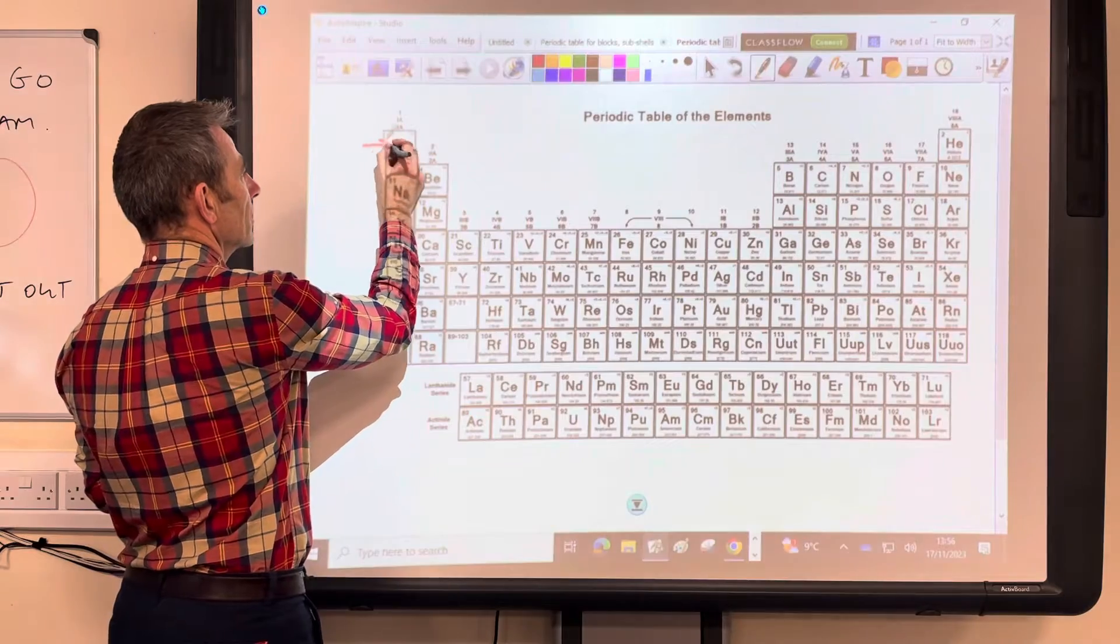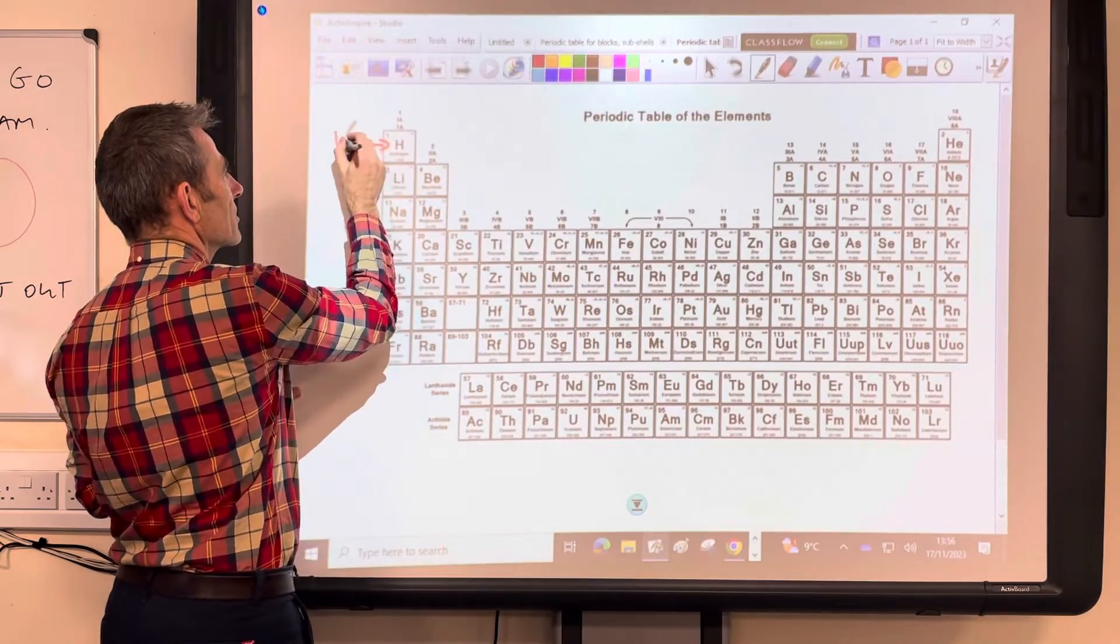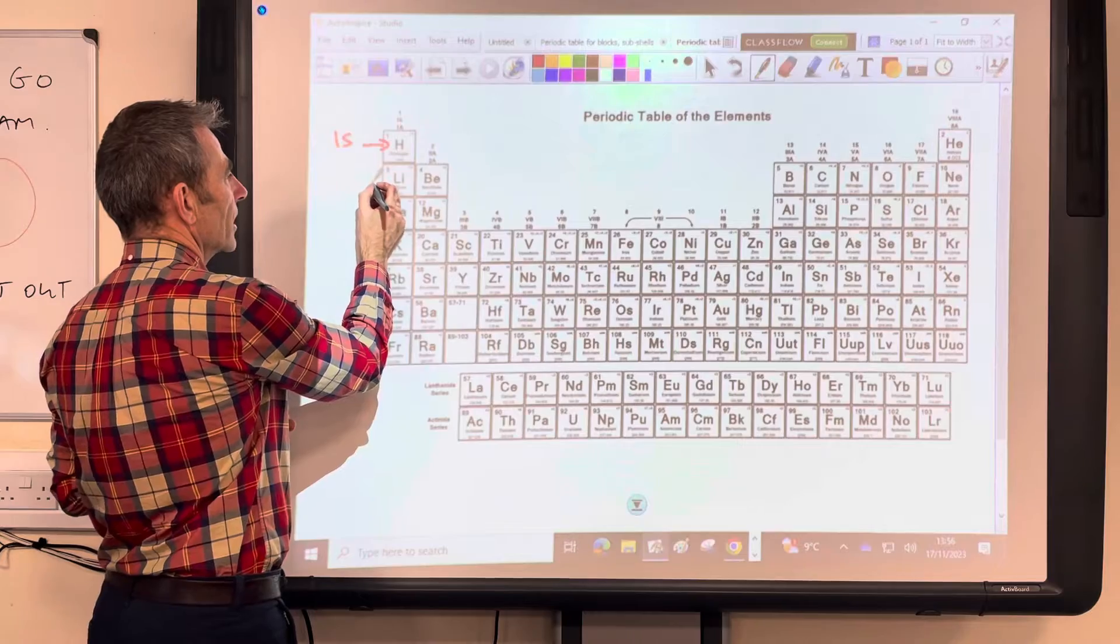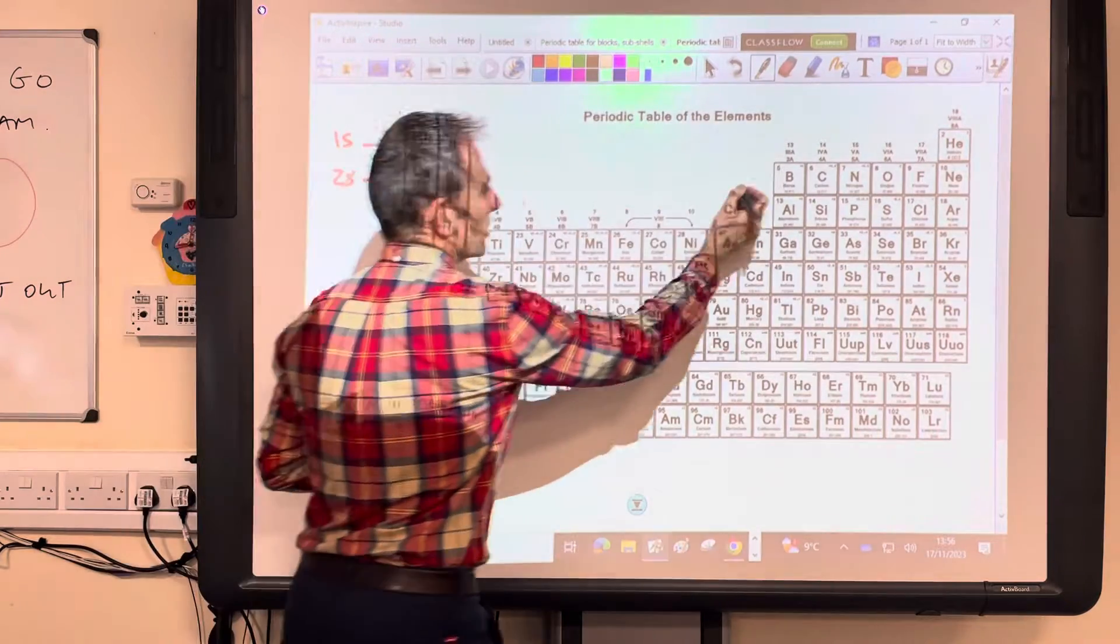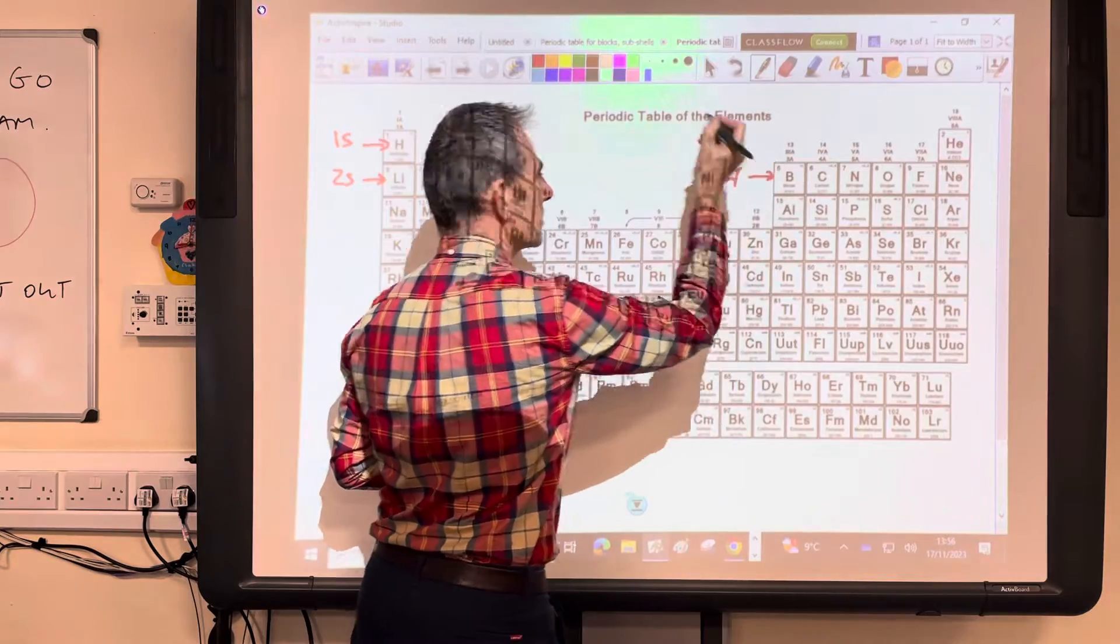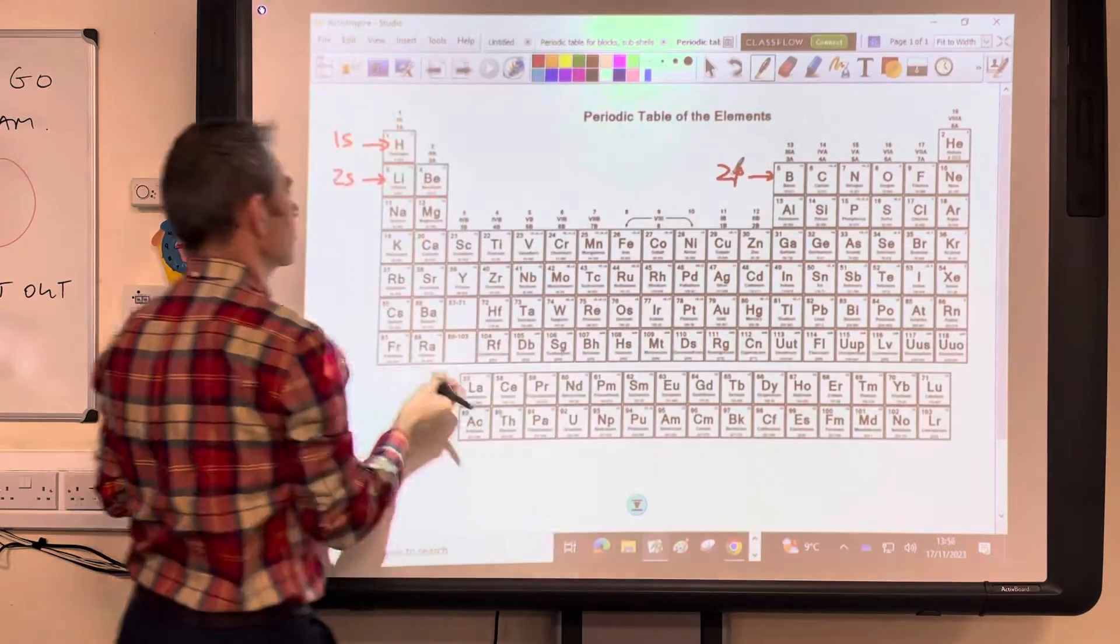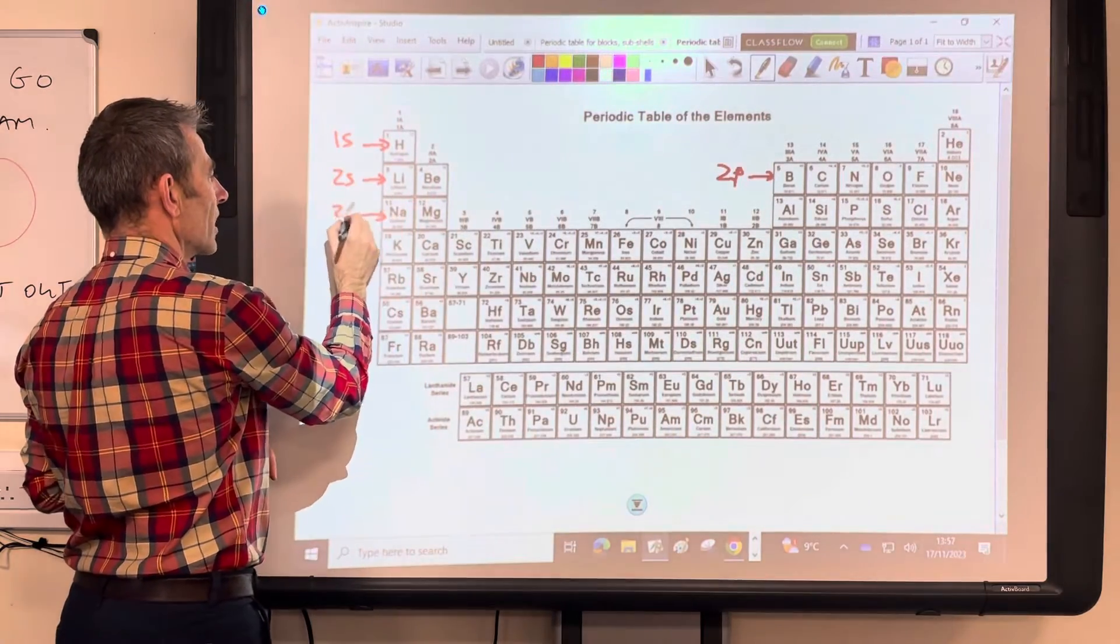So starting with hydrogen, it's the 1s subshell that fills there. And then when you get to lithium, the 2s starts to fill. Boron, 2p. And when you get to sodium, it's 3s.